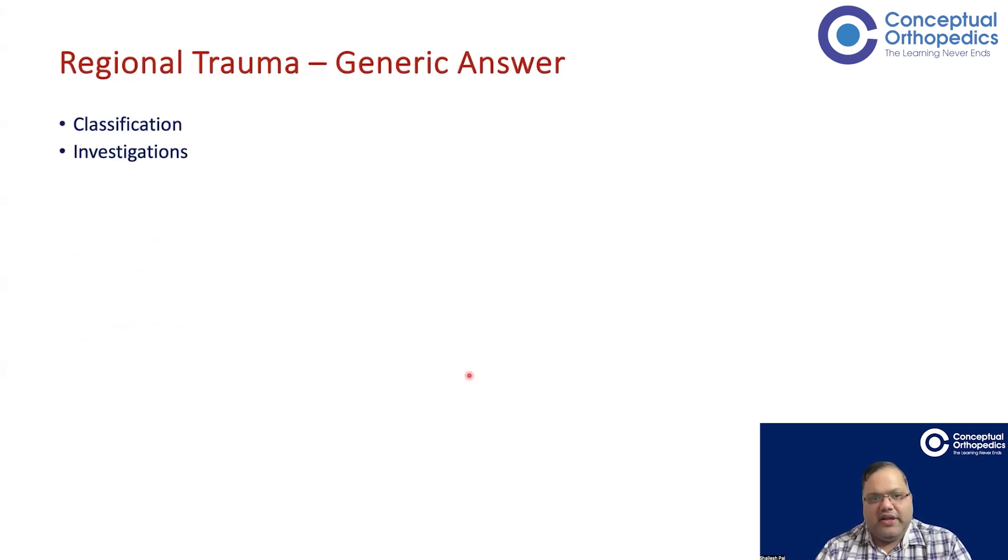Generic answer means no matter what area is asked, if it's a regional trauma question, I'm going to answer on these headlines. I'm going to classify it. Investigations, treatment, conservative. Now classification, if they ask you classification. Investigations, management is the question that they will ask for all subtypes. So it includes investigations. Investigations in trauma is simple. X-ray for all patients, two views, including adjacent joints. Two views, two joints, orthogonal views. And then you're getting CT scan in almost all fractures if it is a periarticular injury.